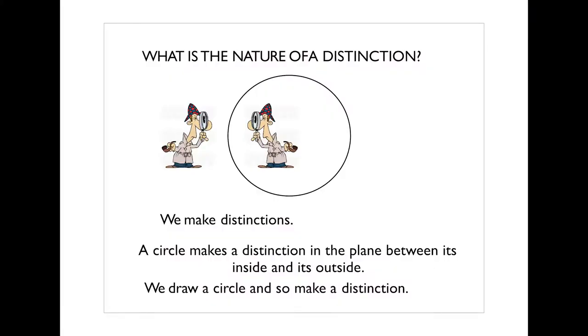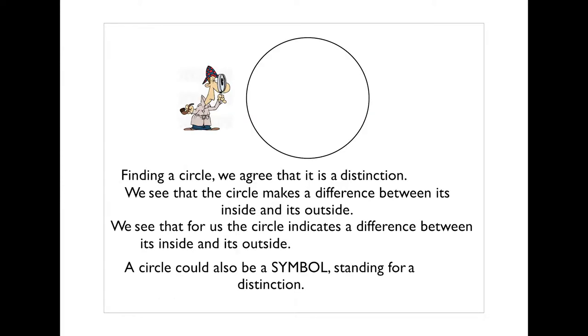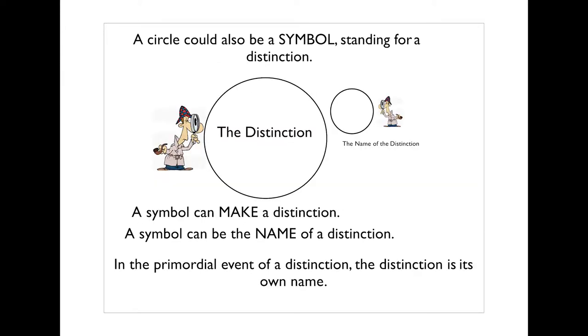What's the nature of a distinction? We make distinctions. Or we imagine that we make distinctions. A circle makes a distinction in the plane between its inside and its outside. We draw a circle and so make a distinction. Finding a circle we agree that it is a distinction. We see that the circle makes a difference between its inside and its outside. A circle could be a symbol standing for a distinction. It could be written outside the circle of the original distinction and become its name. The symbol can make a distinction with our help. A symbol can be the name. And in the primordial event of a distinction that is in a firstness, the distinction is its own name.